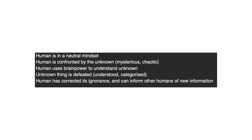The five-stage thought process goes: human in a neutral mindset; human is confronted by the unknown, mysterious and chaotic; human uses brain power to understand the unknown; the unknown thing is defeated, understood, categorized; human has corrected its ignorance and can inform other humans of new information. It's not that these stories are innately compelling. Campbell implied correlation with causation — he looked at all these surviving stories and thought, what connects these things? They all survived, they were memorable. The brain really wants to correct flawed information for our survival. It files it under surprise and then we get a little hit of endorphins in the form of laughter. This explanation for the monomyth doesn't cancel it out — it's just an audience-centric explanation for a hero-centric concept.